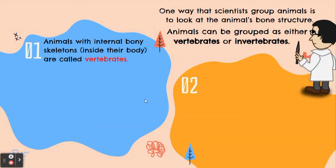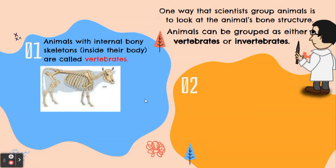Animals with internal body skeletons, or skeletons inside their body, are called vertebrates. Here is the picture — this is the example of vertebrates. This is a cow's skeleton inside its body.